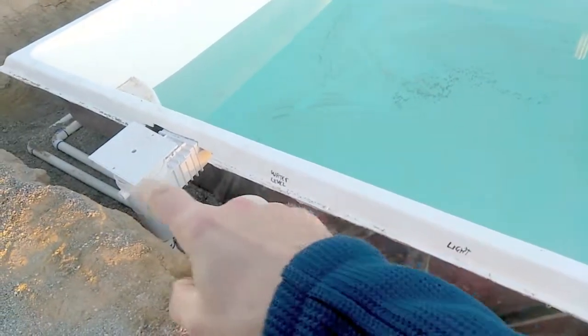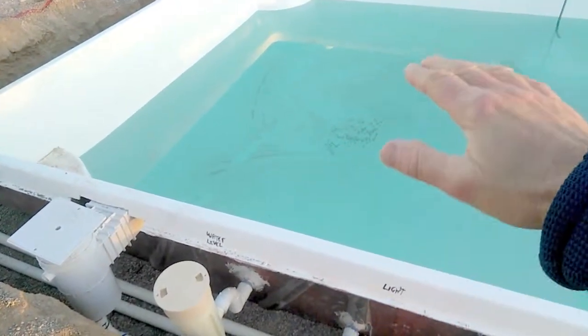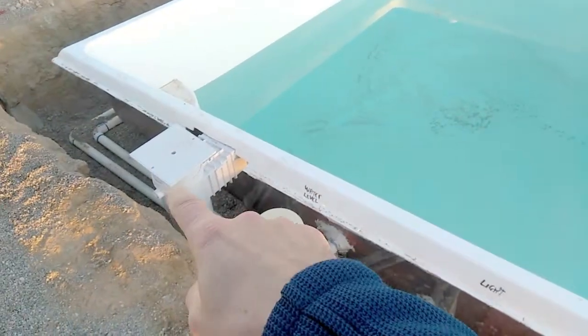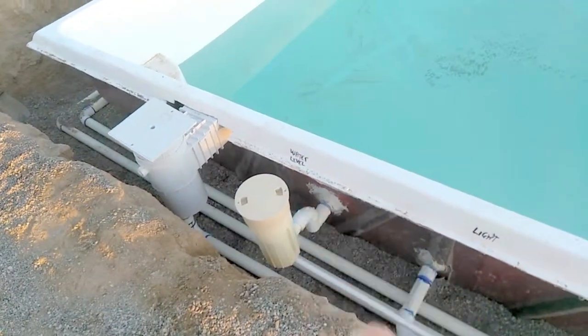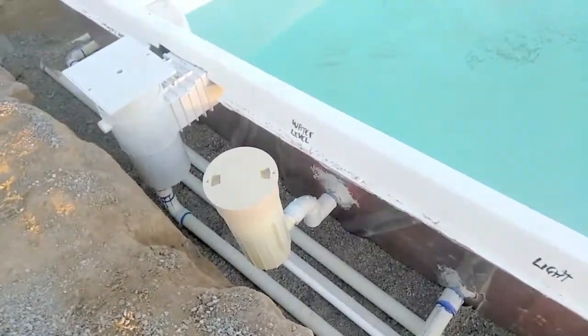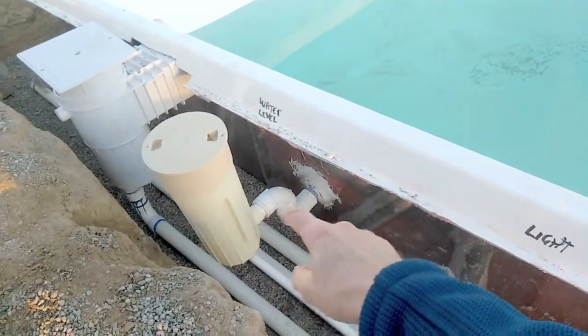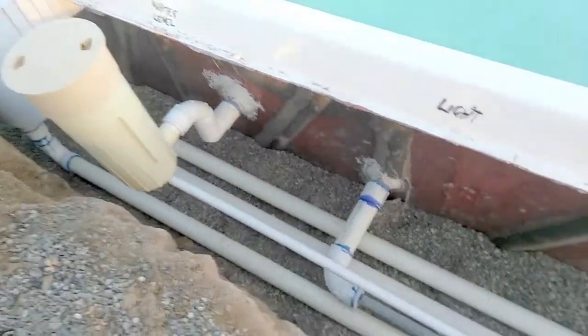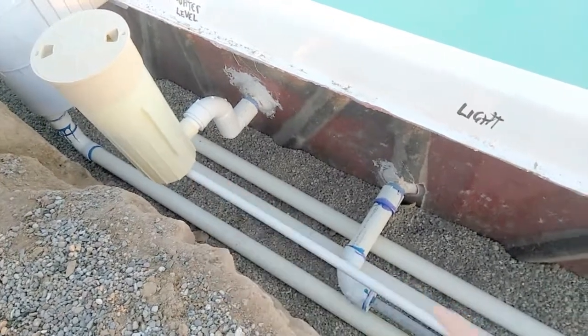There are two options to maintain the water level. This is the skimmer, and this is additional equipment that adds water into the pool through this pipe. It has a one-inch pipe supply.